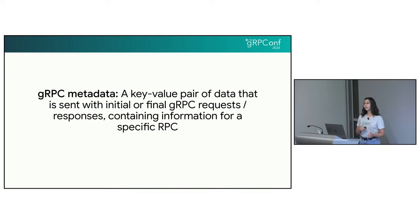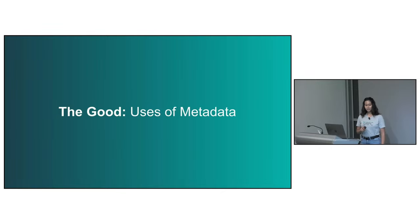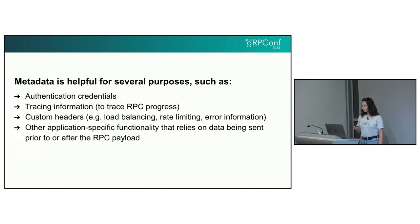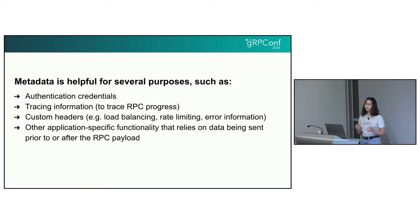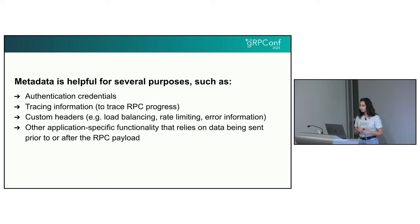Initial metadata is sent before the payload, and trailing metadata is sent after. So let's look at the good part of metadata, which is its many uses. Metadata can be very helpful for several different things, including auth tokens that you want to send before the RPC. We can also use it for tracing information — for instance, getting the timestamp at the start of an RPC, or seeing the duration of an RPC by taking the difference between when we send the initial metadata and when we receive the trailing metadata. We can also use it for custom headers, like why the server rejected an RPC in the error information. And finally, other application-specific functionality — for instance, teams sending the version of the application that the request is coming from so that they can process it accordingly.